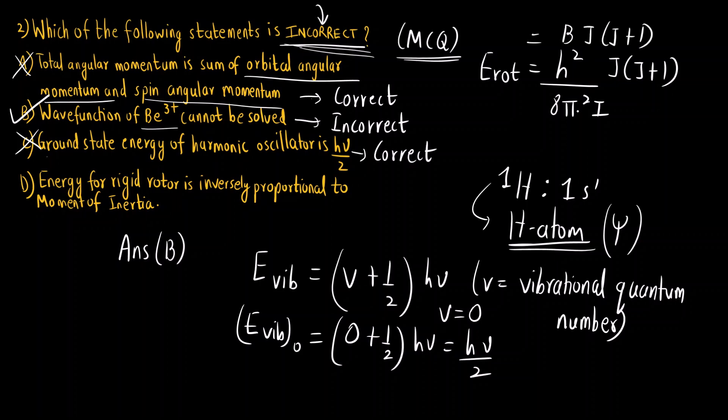We can write it as B j(j+1). B is the rotational constant and this value is in joules. So here we can see rotational energy or energy for a rigid rotor is inversely proportional to i. i is the moment of inertia. So you can see this option is also a correct statement, so this is not the correct option.